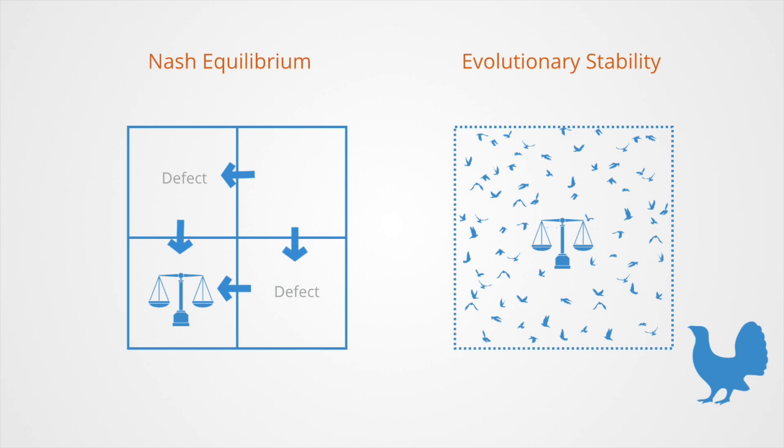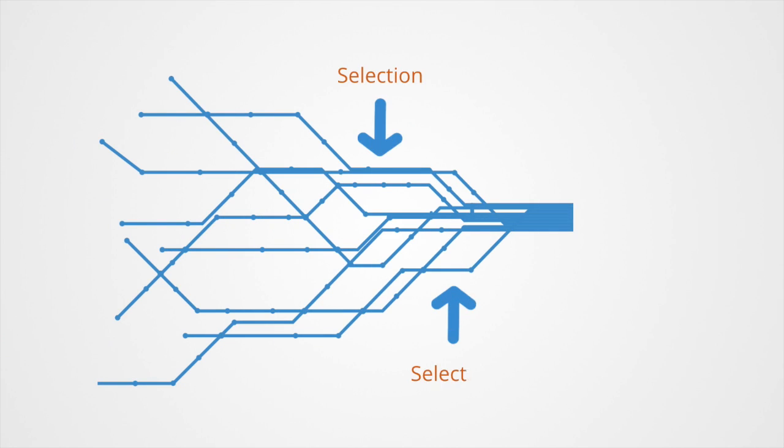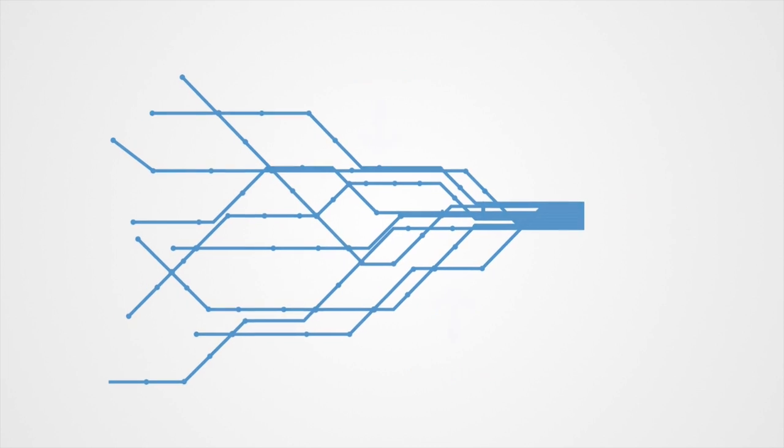Indeed, in the modern view, equilibrium should be thought of as the limiting outcome of an unspecified learning or evolutionary process that unfolds over time. In this view, equilibrium is the end story of how strategic thinking, competition, optimization, and learning work, not the beginning or middle of a one-shot game.